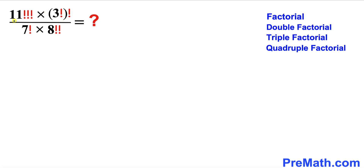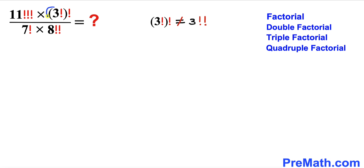Here's our question: we are going to simplify 11 triple factorial times 3 factorial and then factorial once again, divided by 7 factorial times 8 double factorial. Keep in mind that 3 factorial and then factorial is not equal to 3 double factorial — these are two completely different things.